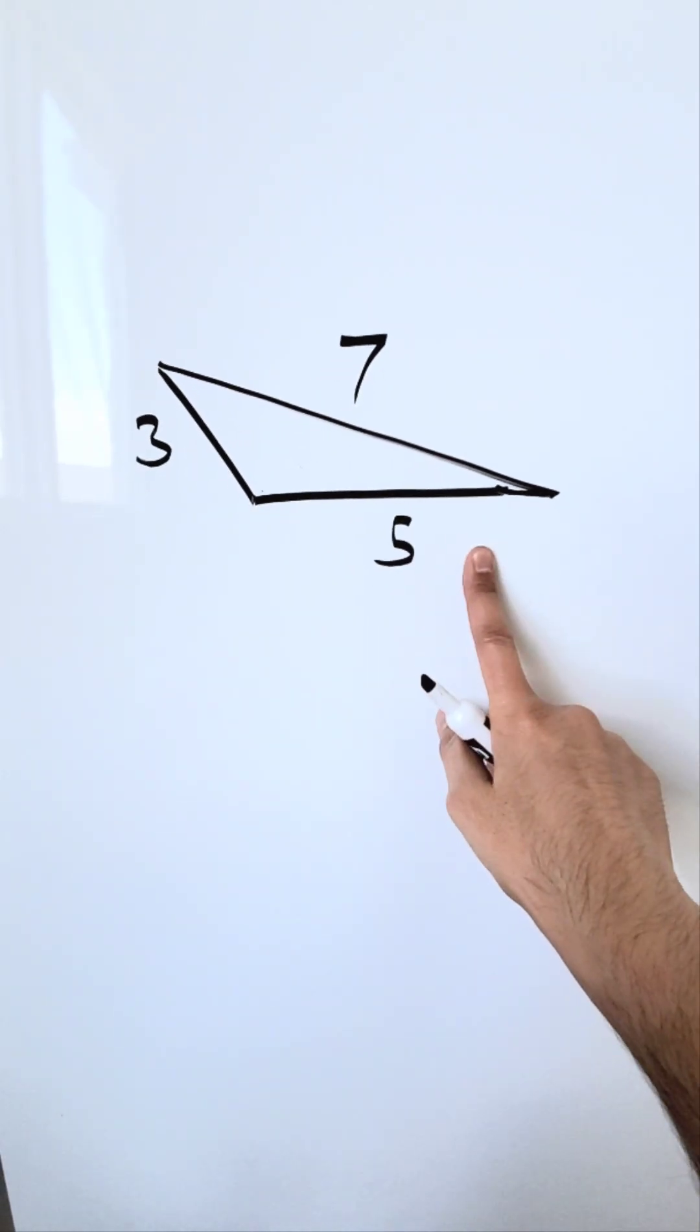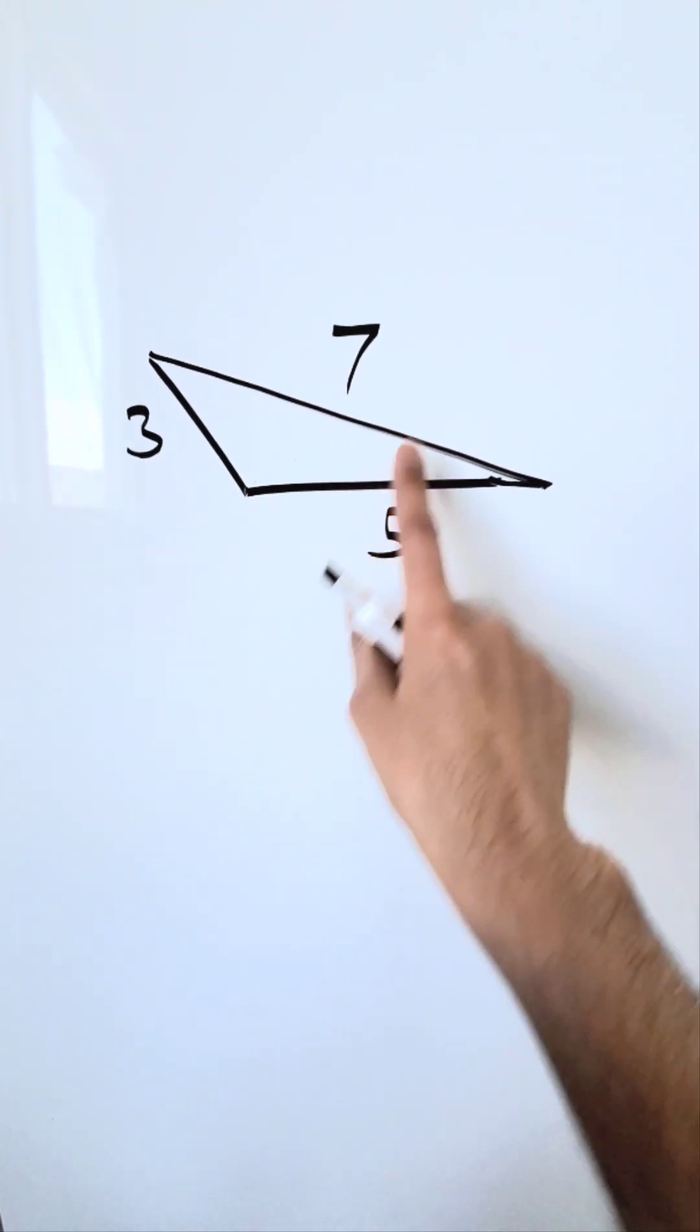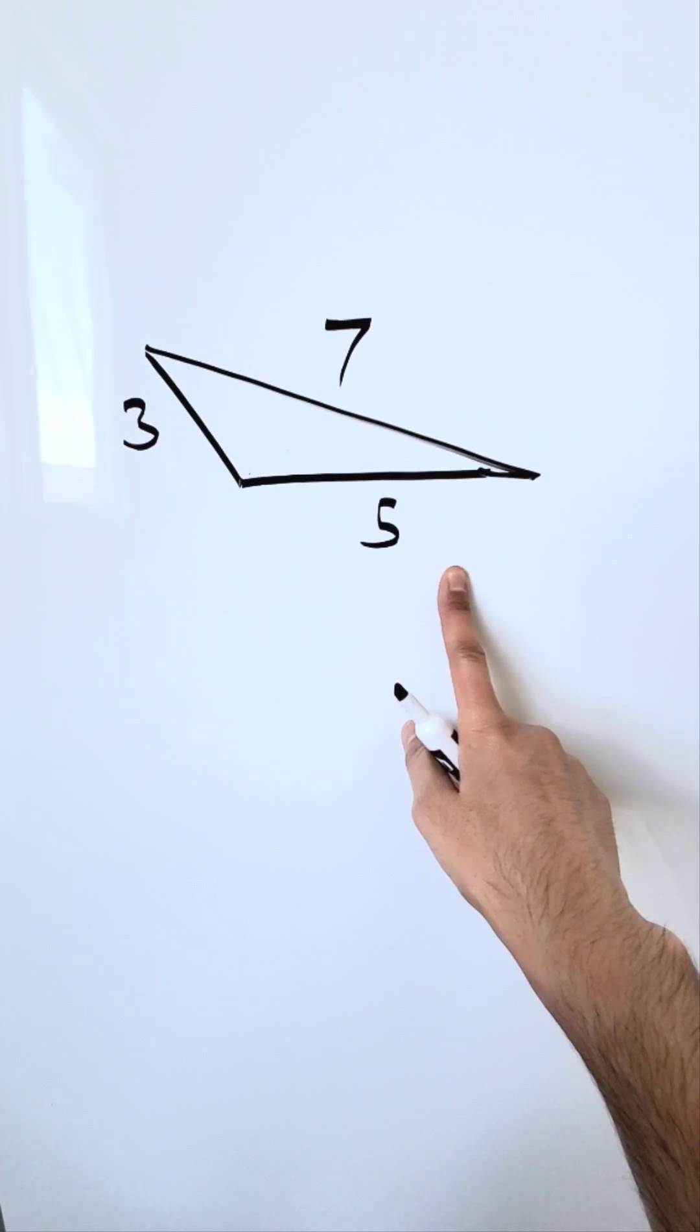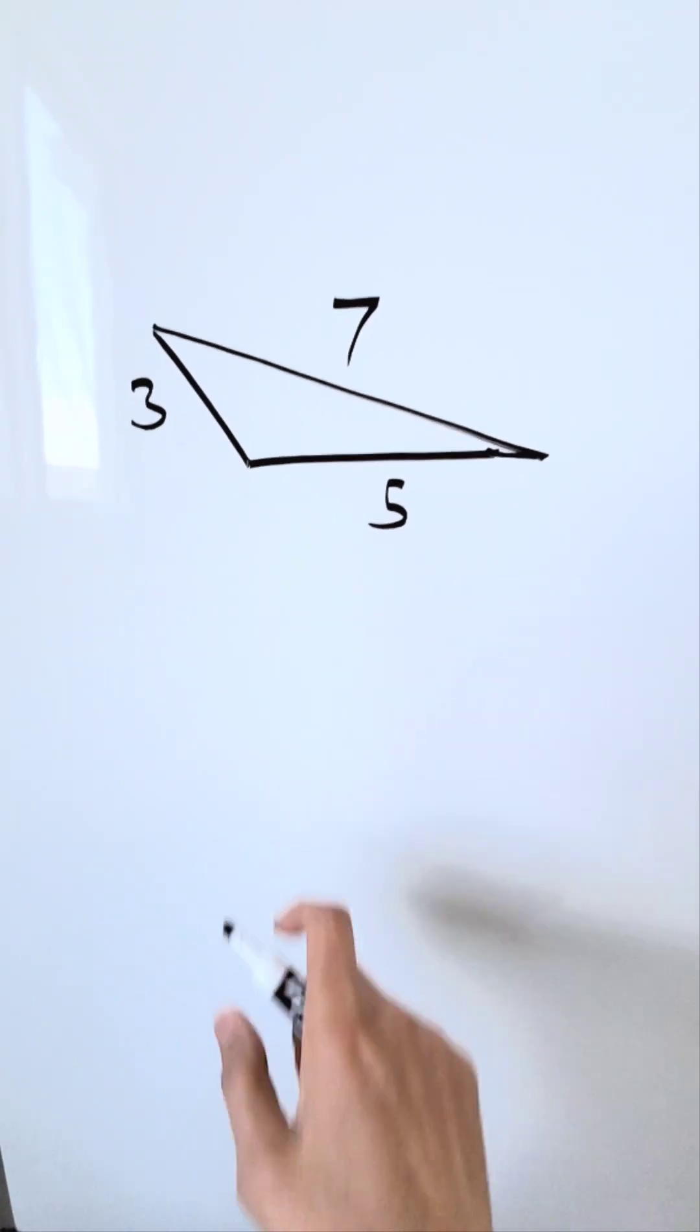We are looking over here at a triangle with no equal sides. The sides are 3, 5, and 7. I have no angles given. How can I determine the area of such a triangle?